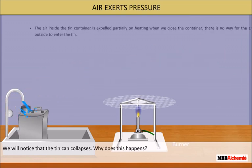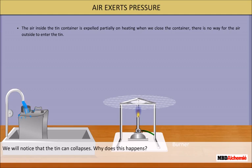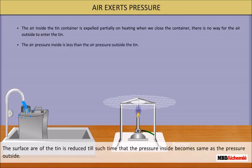Why does this happen? The air inside the tin container is expelled partially on heating. When we close the container, there is no way for the air outside to enter the tin. The air pressure inside is less than the air pressure outside the tin. The air outside the tin presses against its surface, crushing the tin. The surface area of the tin is reduced until the pressure inside becomes the same as the pressure outside.